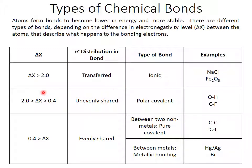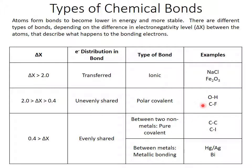If your gap is a little smaller — your delta chi is between 2 and 0.4 — that's small enough that those electrons are going to be shared, but there's enough of a gap that they're going to be unevenly shared. The more electronegative atom is going to hog a lot of the electrons. The sharing makes this a covalent bond, and the uneven sharing means it's going to be polar. Examples of this are oxygen-hydrogen bonds and carbon-fluorine bonds.